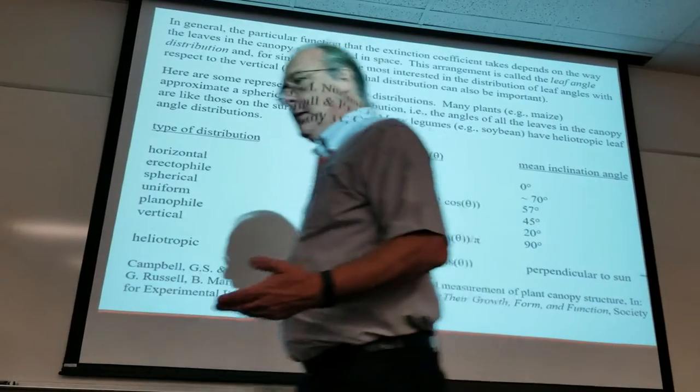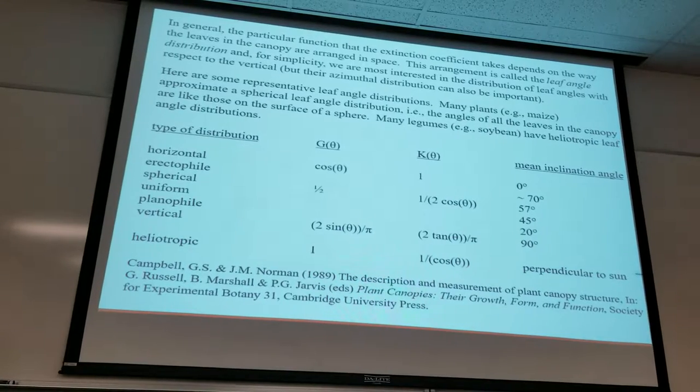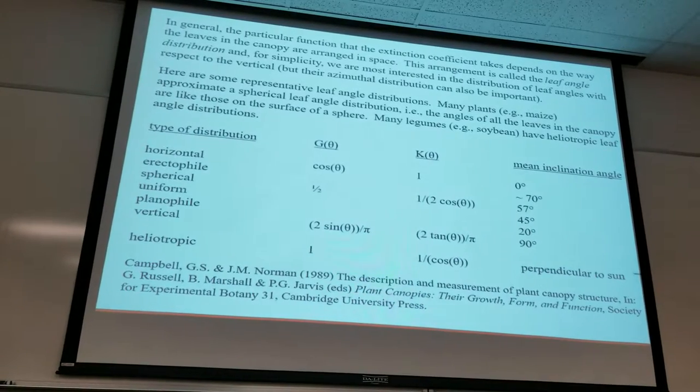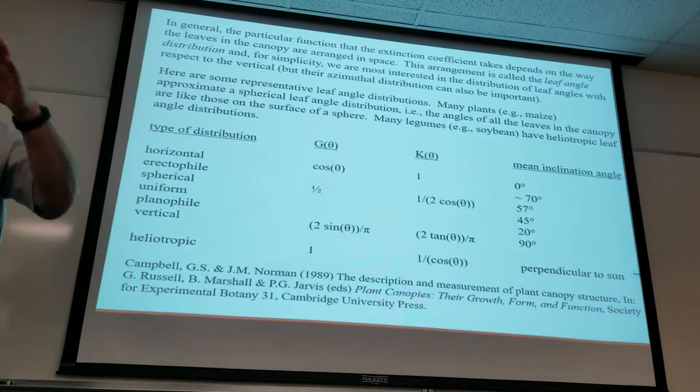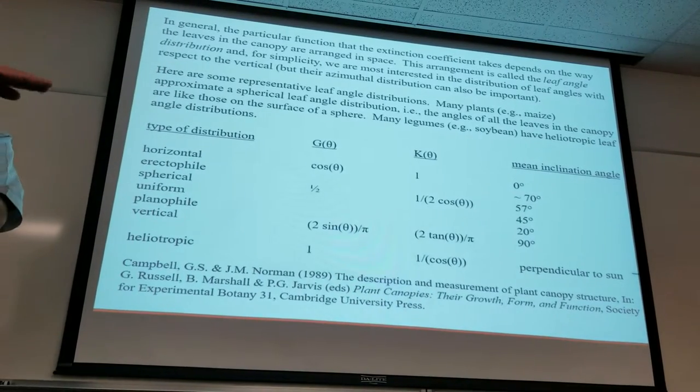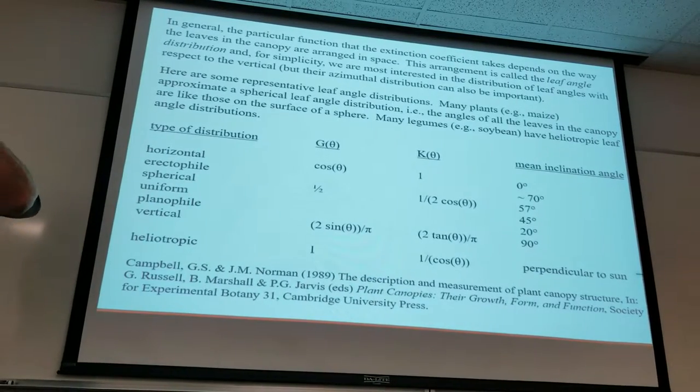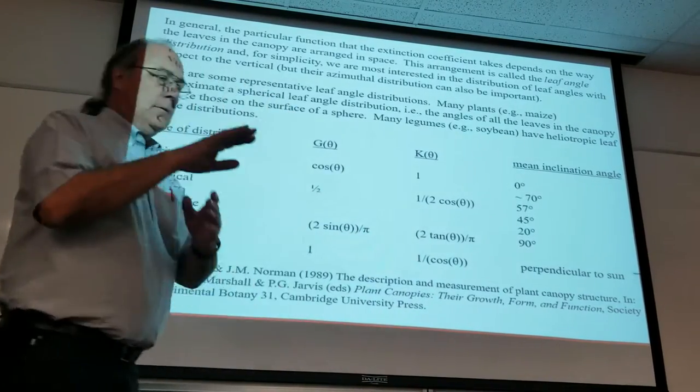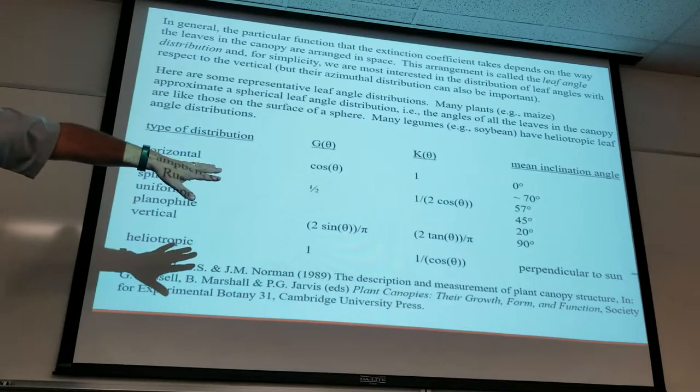Two things affect the transmittance through the canopy. Number one, how much leaf area is in the canopy, or in more complex canopies, leaves, stems, reproductive organs, flowers, everything in the canopy. The other thing is the distribution of that in space, the angles that those leaves have both with respect to the vertical and with respect to the azimuth, to the points on the compass. Through all this, the assumption is that the azimuthal distribution doesn't affect the transmittance. It's random.